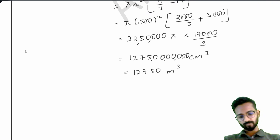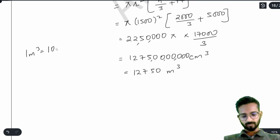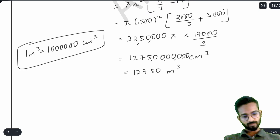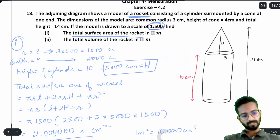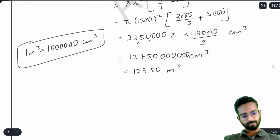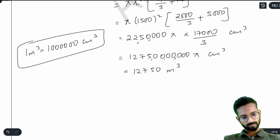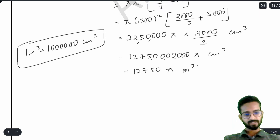Converting to meter³: since 1 m³ = 1,000,000 cm³, the volume becomes 12,750 π m³. They asked for the answer in terms of π, so we keep π. The total volume of the rocket is 12,750 π m³.